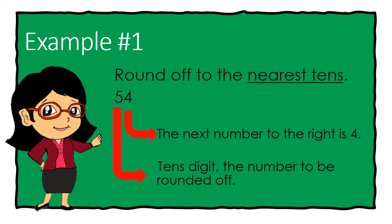Since 4 is less than 5, then 54 rounded off to the nearest tens is 50. We simply copy number 5, then turns the number to its right into 0.